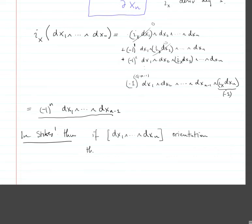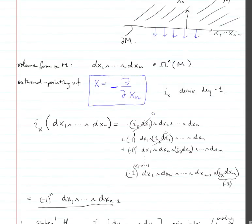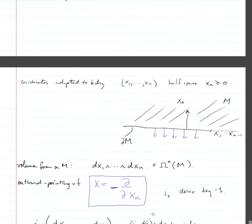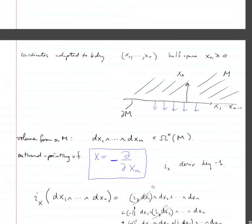Here we're using boundary coordinates — a coordinate system where the manifold is given by the half-space xn ≥ 0. If you were using slightly different ones, like if the manifold was given by x1 ≥ 0, then you'd need to redo this.